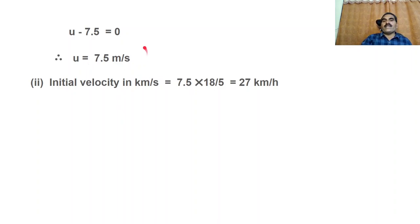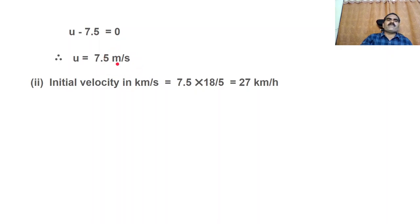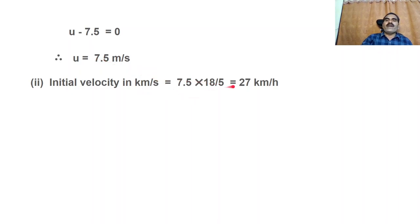The scooter is moving with an initial velocity of 7.5 meters per second. Now we have to convert this into kilometers per hour. To change meters per second to kilometers per hour, multiply by 18 by 5. So 7.5 into 18 by 5 equals 27 kilometers per hour.